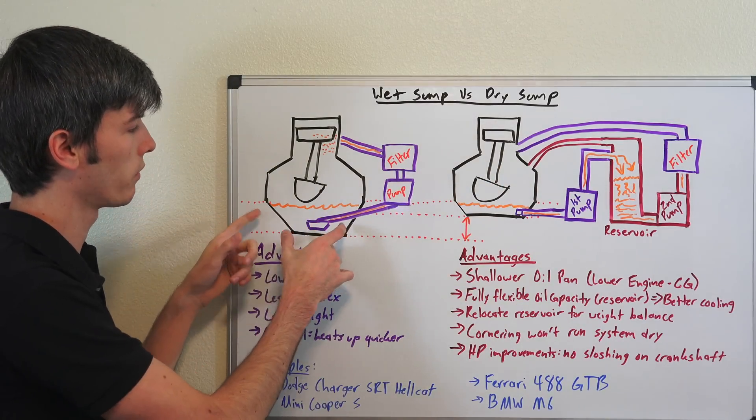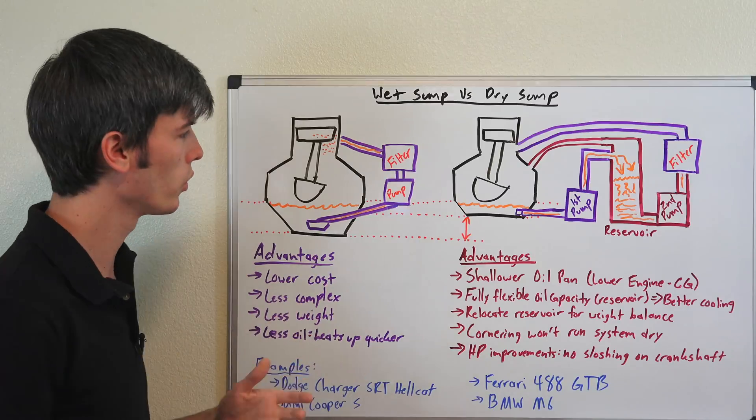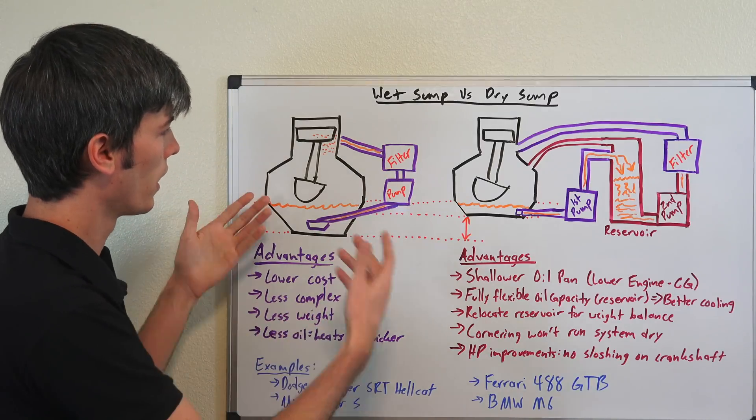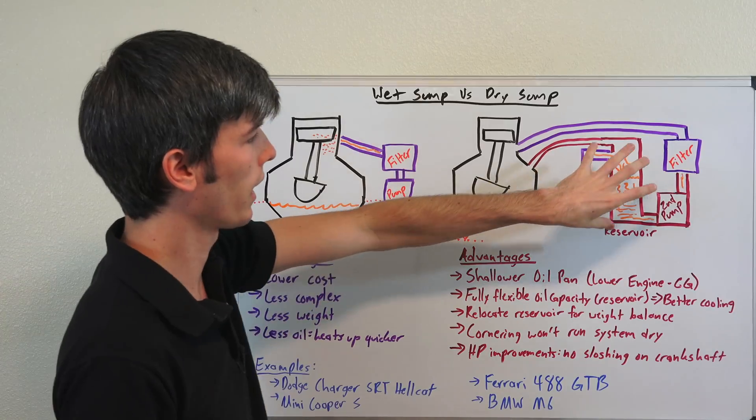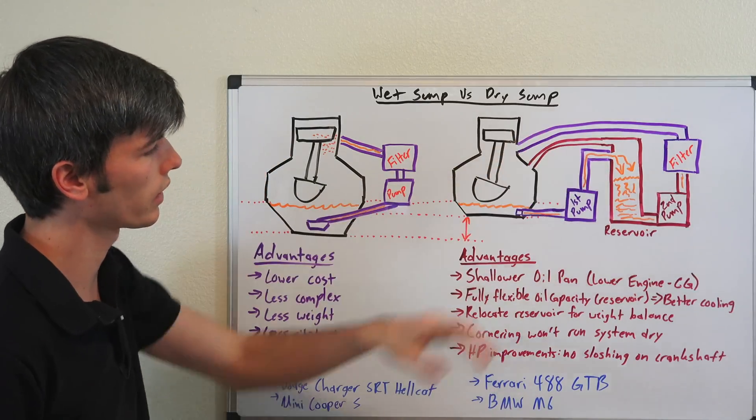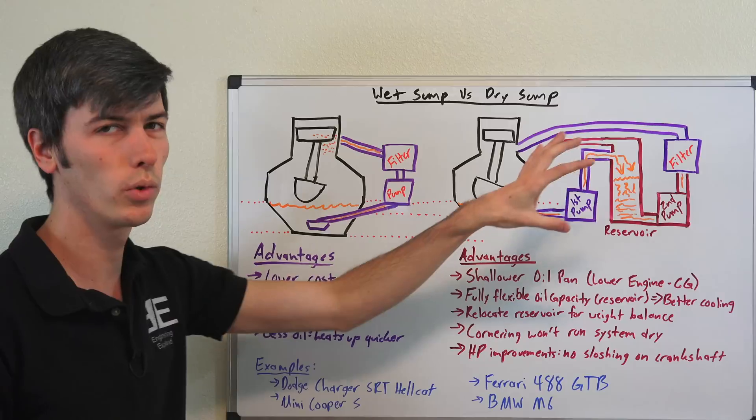So here you're restricted by the size of your oil pan. If you want a really large oil pan you can do that but then you're going to get closer to the ground and you're going to make sacrifices. Whereas here, externally, you can locate it wherever you want and choose exactly how much oil you want.